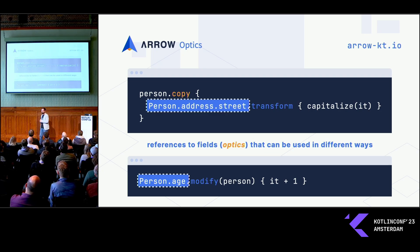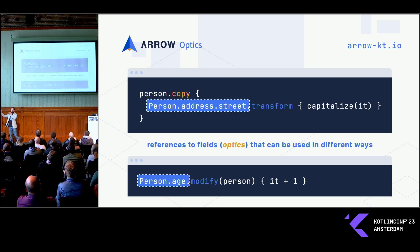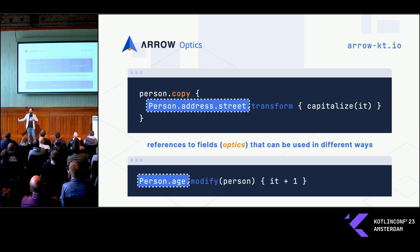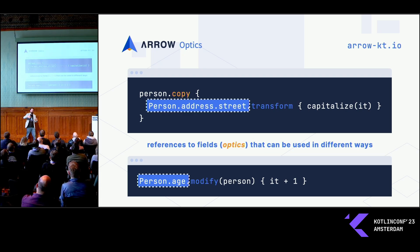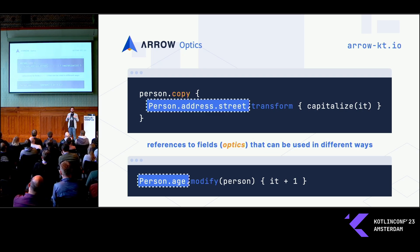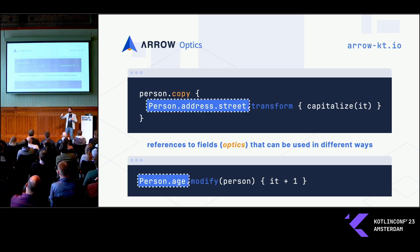We have another copy function. But now this copy function allows you to give a mutable reference and say what you should do at this point, and then it will perform all those modifications for you. Or if you want just to do one small thing, you can use this modify, which allows you to change whatever value was already there — which, using the regular copy in a data class, essentially forces you to write down again the whole thing you wanted to modify.